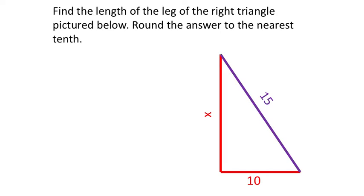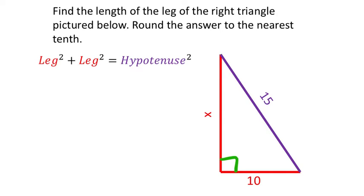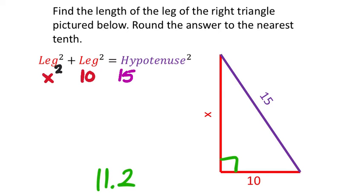Here's another one. This one has an x value as one of the legs, because the two sides that make up the right angle are the legs. Take a minute to find the value of this leg. The answer, rounded to the nearest tenth, is 11.2. The equation: x squared plus 10 squared equals 15 squared, since the other leg is 10 and the hypotenuse is 15.